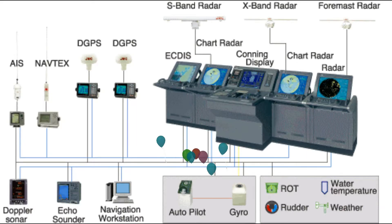Let's talk about the information system. According to Google, an information system is an integrated set of components for collecting, storing, and processing data, and for providing information, knowledge, and digital products. Information systems are used to run inter-organizational supply chains and electronic markets. So how could we relate this definition to our subject matter?